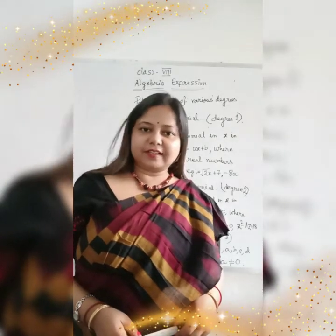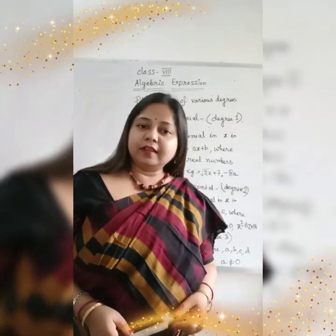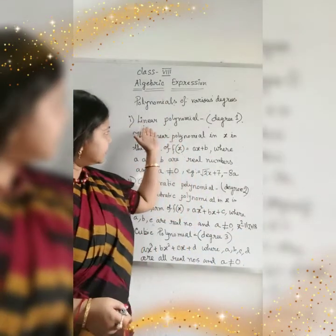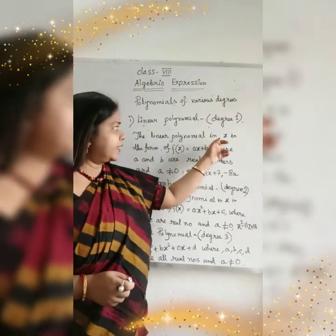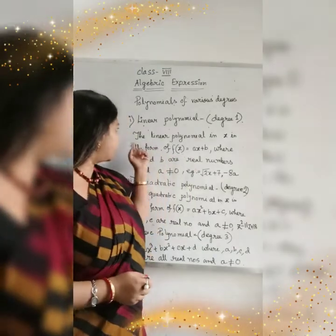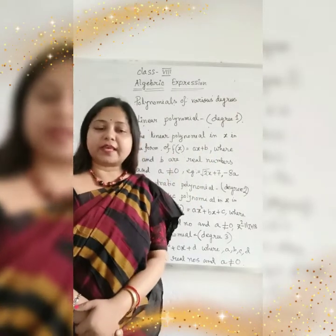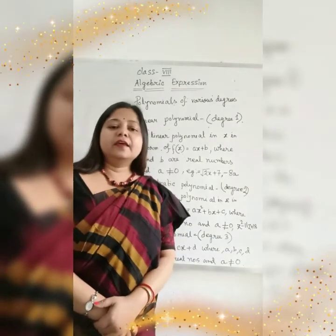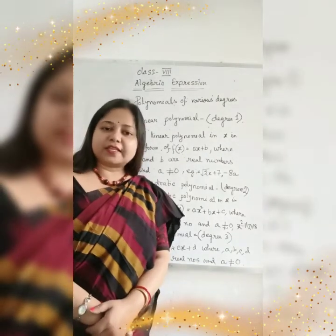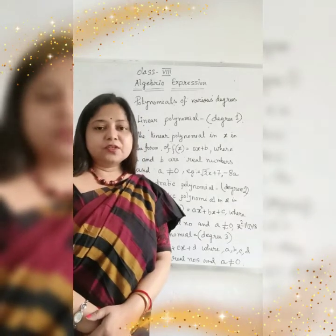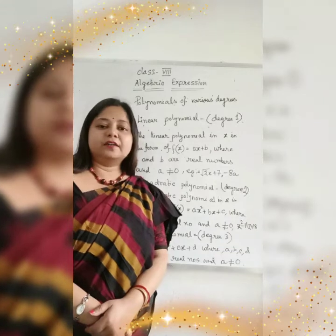So our next topic is polynomials of various degree. When a polynomial has degree 1, it is called a linear polynomial. In this board, a linear polynomial, when its polynomial has degree 1, x is in the form of ax plus b, where a and b are real numbers and a is not equal to 0. For example, suppose 2x plus 5. You can see that the power of x is 1, so that is called linear polynomial.